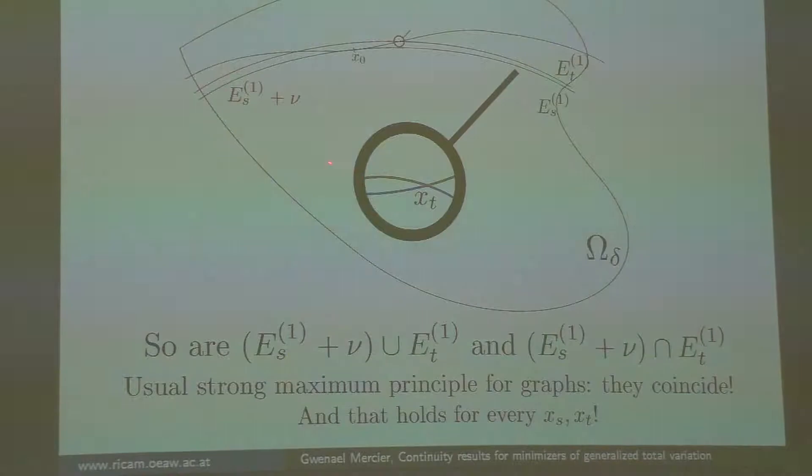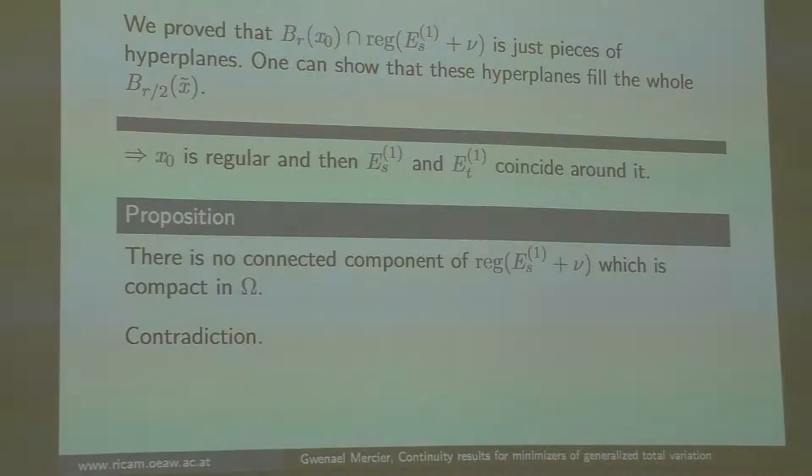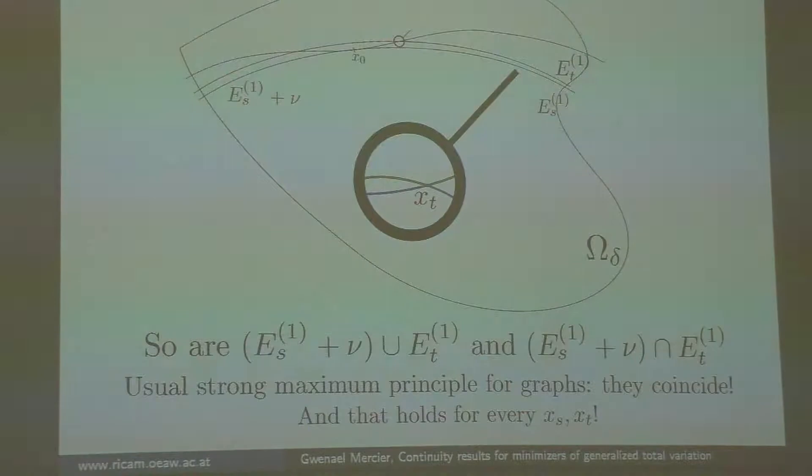I have a comparison principle as I mentioned before, a strict maximum principle for the equation. Here you could tell me, well, they were smooth, but if you take the minimum it's just continuous. But the theorem still works. I know that either it's not possible or, like for harmonic functions, they are constant. So they are constant. It means the two surfaces coincide. But that I can do for every x_s, x_t, meaning that actually all of this is just pieces of hyperplane, because if you want to coincide everywhere, you have no choice. You are a hyperplane.